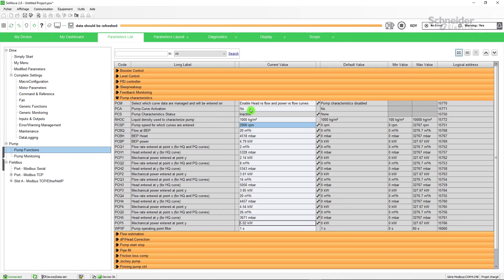To activate the curve, pump curve activation must be set to yes. Then check the pump characteristics status. If active is displayed, the data are consistent and are locked. If failed is displayed, that means some points have not been entered or data entered doesn't respect the rules.